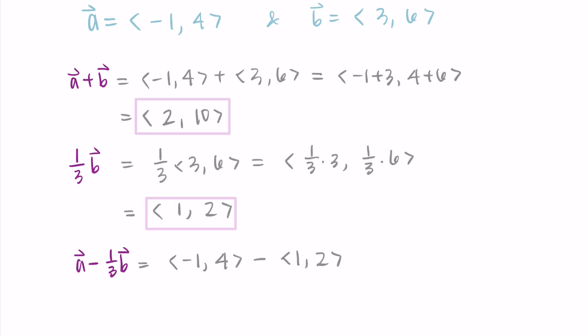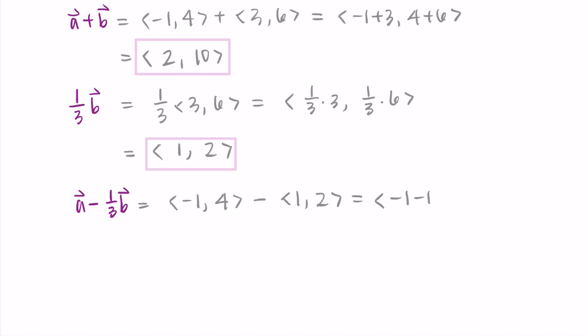Then I subtract corresponding components. So I do negative one minus one for the x component and four minus two for the y component. So here I'm getting negative two, two as my resulting vector.